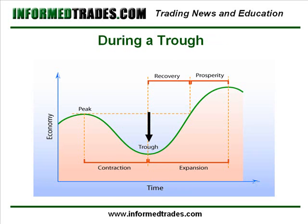During a trough, interest rate cuts have started to filter through the economy and are working to push it back towards an expansionary period. During this time, the balance will normally begin to shift back towards price stability and the posture of the Fed will normally be one of either inaction or a bias towards tightening the money supply causing interest rates to rise. The reaction of markets in this case will generally depend on how quickly the Fed moves to raise interest rates and how quickly the economy is expected to emerge from the trough.